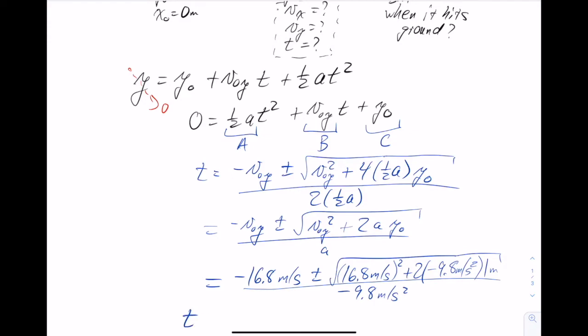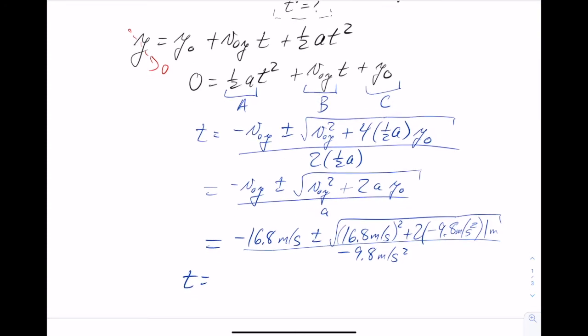Plugging in those numbers, very careful not to mess up the plus and minus signs, I get time is equal to negative 0.059 seconds, and time is equal to 3.487 seconds. And I'm keeping extra sig figs here, because this is an intermediate calculation, so I don't want to throw away any information yet.